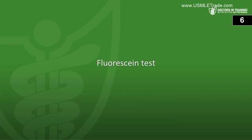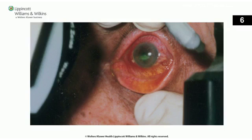Next: what test is used to detect corneal abrasions? You place fluorescein dye on the surface of the eye and examine the eye under a blacklight. If you see any pooled areas of fluorescein, that indicates an abrasion, ulcer, or some type of defect in the cornea.